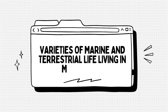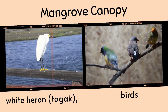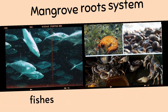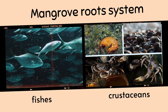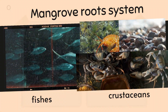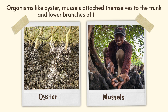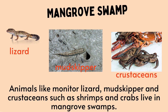There are varieties of marine and terrestrial life living in mangroves. Animals like white heron, tagic, and other birds inhabit the mangrove canopy. Fishes and crustaceans live underneath the mangrove root system. Organisms like oysters and mussels attach themselves to the trunk and lower branches of the mangroves. Animals like monitor lizard, mudskipper, and crustaceans such as shrimps and crabs also live in mangrove swamps.